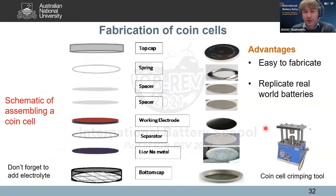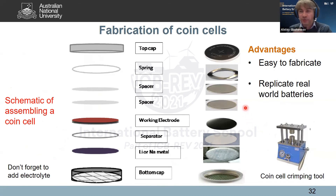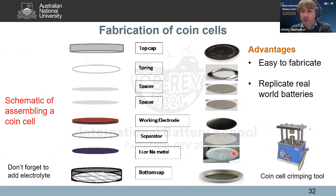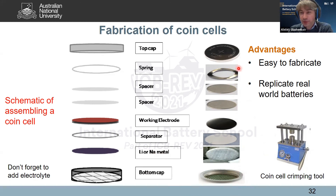After preparation, you move to the assembly stage inside the glove box, where electrolyte lives permanently. You put all the things together: the working electrode, the lithium foil reference (or sodium metal for sodium battery research), separator, spacer, spring, and then use the coin cell crimping tool to squeeze and seal the bottom and top cups. After this, the cell is sealed and safe, and you can take it outside for testing.